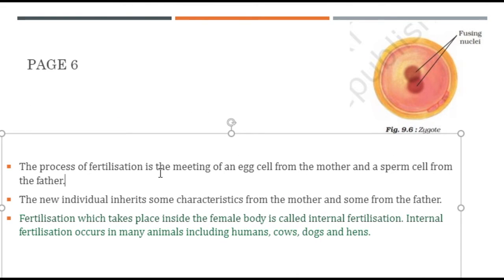Fertilization is the meeting of an egg from the mother and a sperm cell from the father. The new individual inherits some characters from the mother and some from the father. Fertilization which takes place inside the female body is called internal fertilization. Examples of internal fertilization include humans, cows, dogs, and hens.